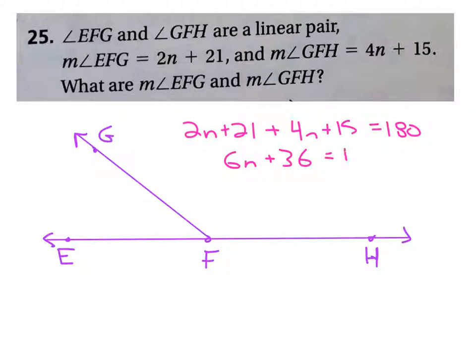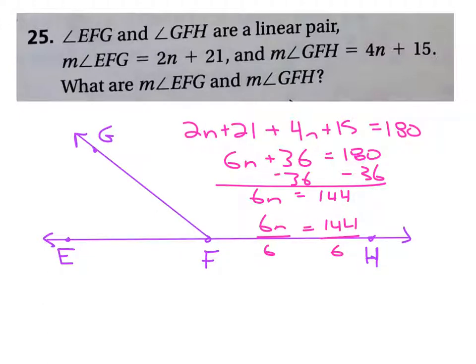6N plus 36 equals 180. Using the subtraction property of equality, we've got 6N equals 144. Then if we do 6N divided by 6, and 144 divided by 6, that's 24. So N equals 24.